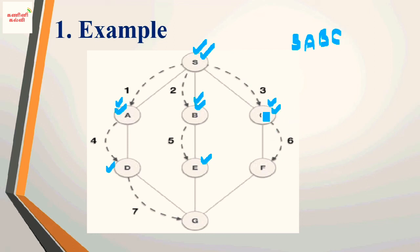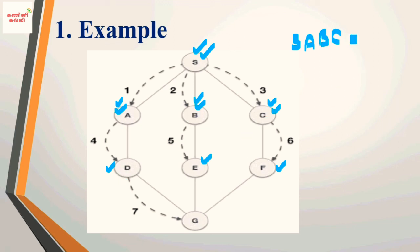We take C from the front of the queue on a first-in-first-out basis. C is added to the BFS order. The non-visited adjacent vertex of C is F, so F is added to the queue. Next, we take D from the front of the queue, delete it, and D is added to the BFS order.